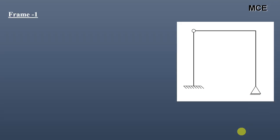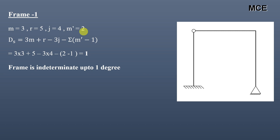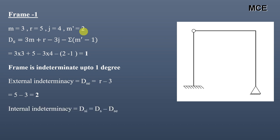For Frame 1, we can see it has a total of 3 members, 5 reactions (3 at the fixed support and 2 at the hinged end), 4 joints, and 1 internal hinge. The number of members meeting at this internal hinge is 2, so m′ = 2. The value of ds = 1, so this frame is indeterminate to one degree. External indeterminacy = r − 3 = 5 − 3 = 2. Internal indeterminacy = 1 − 2 = −1.